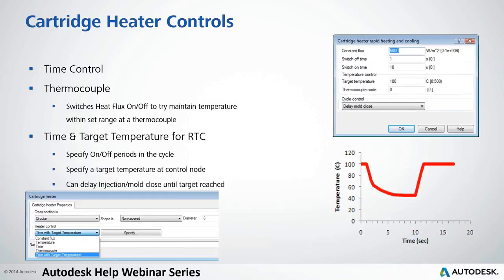Finally, time and temperature based FTC control allows you to define switch-off and on times and then how to control the process, including a delay until a target temperature is reached. Be careful here — if the target temperature is not reached, the cycle could become very long, not because of part cooling but because the cartridge or heating system is not reaching the desired temperature.